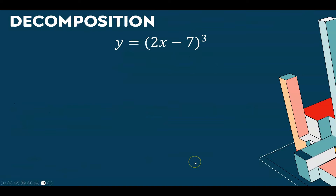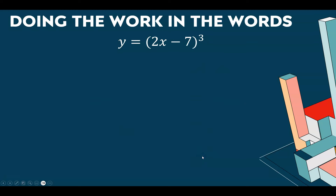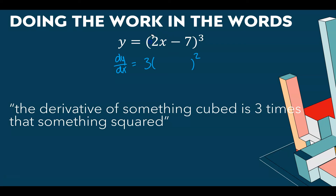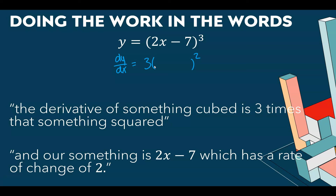For 2x minus 7 cubed, I'm thinking of this as something cubed. The derivative of something cubed is 3 times that same something squared. I'm leaving the input blank for a second because it doesn't matter what the input is — if you have something cubed, it's going to have a derivative of 3 times things squared. That something — the something that was cubed and is now squared — is 2x minus 7, which has a rate of change of 2. So we can just do the chain rule straight through.